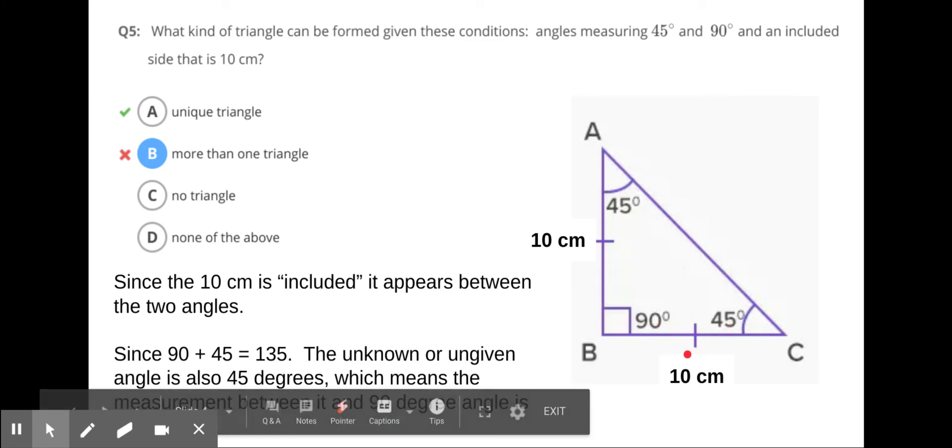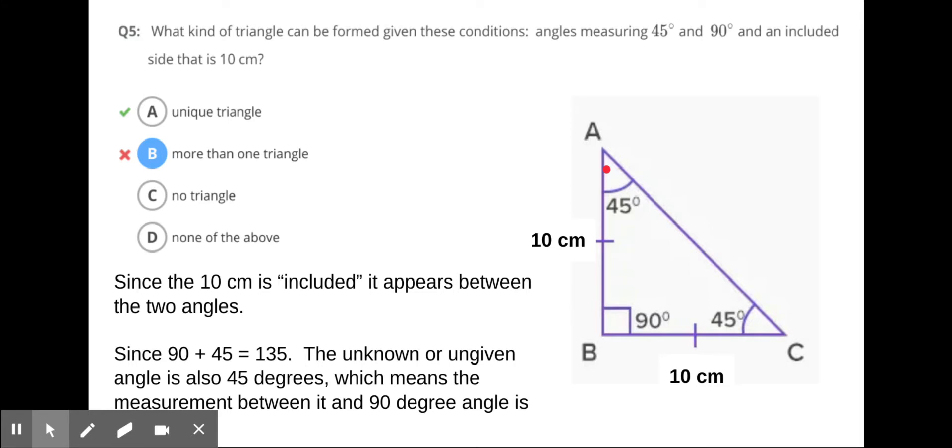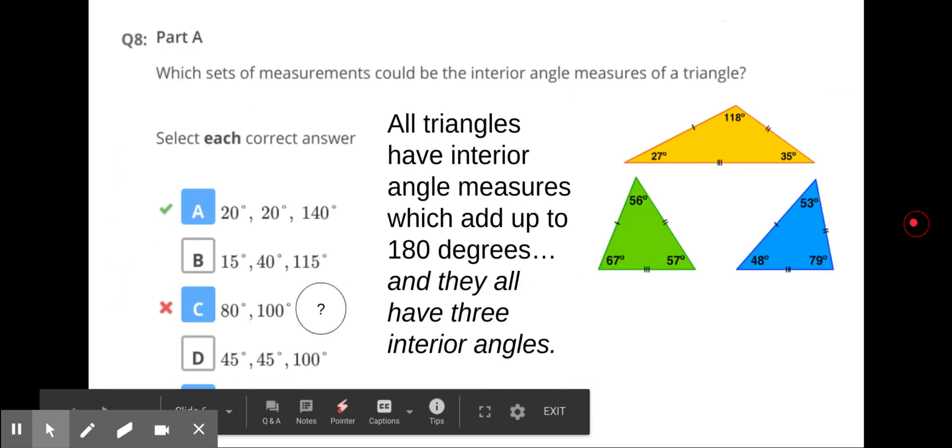We see here between 45 and 90, 10 centimeters. Since this is 90, this is 45, they have to equal 135, which means this side has to be 45. So what we have here is an isosceles right triangle. There's the base right there, the sides here equal. We've had problems like this before.